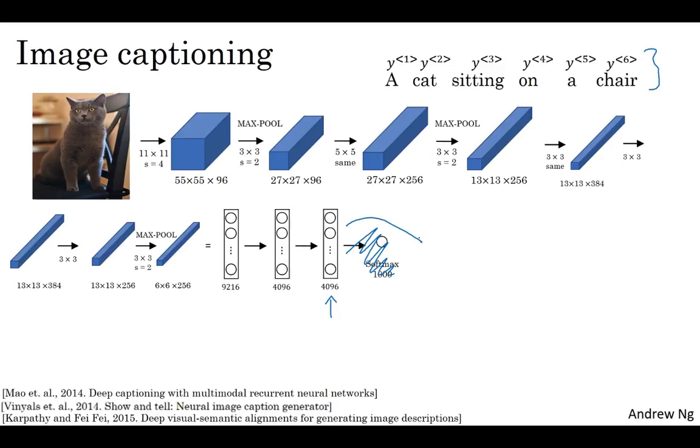You can then take this and feed it to an RNN, whose job it is to generate the caption one word at a time. So similar to what we saw with machine translation, translating from French to English, you can now input a feature vector describing the input and then have it generate an output sequence or output set of words one word at a time. And this actually works pretty well for image captioning, especially if the caption you want to generate is not too long.